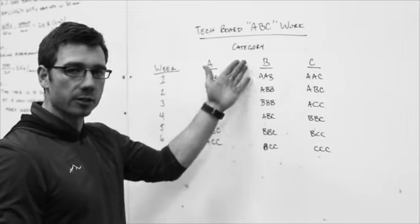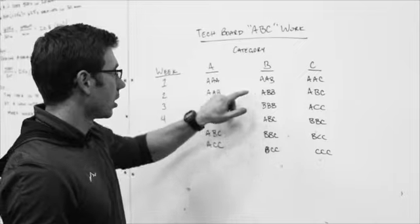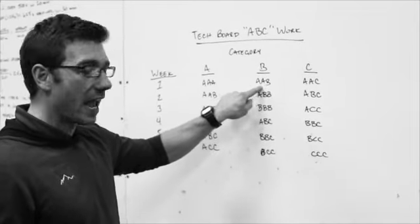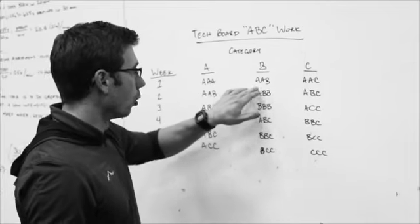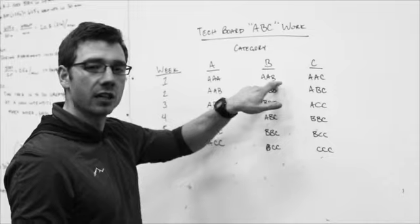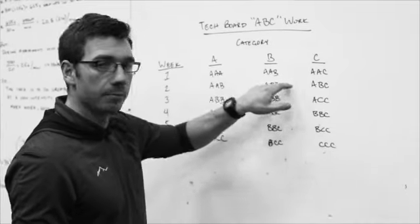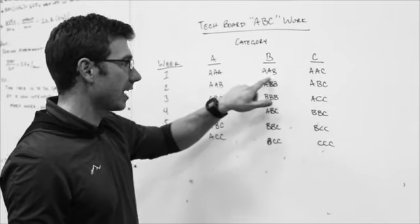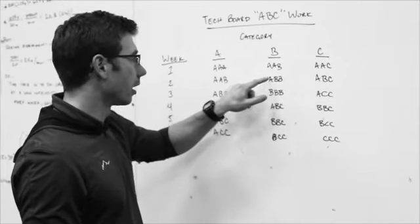So if we were to take a B climber, somebody who did eight to fourteen, week one a B climber is going to have a hold pattern A, A, B. So they're going to touch two, pull on two A holds and then they're going to pull on a B hold and then A, A, B, A, A, B. So they're always moving A, A to a B, back to an A, to an A, to an A, to a B, and so on.